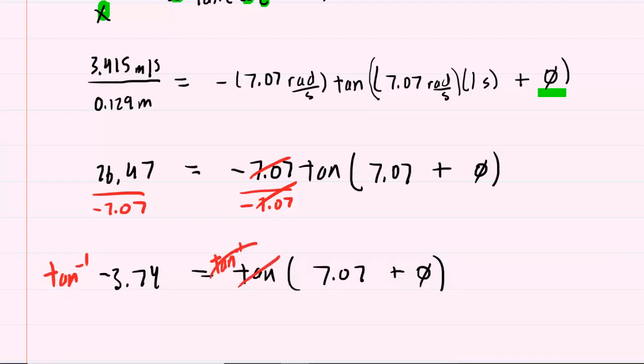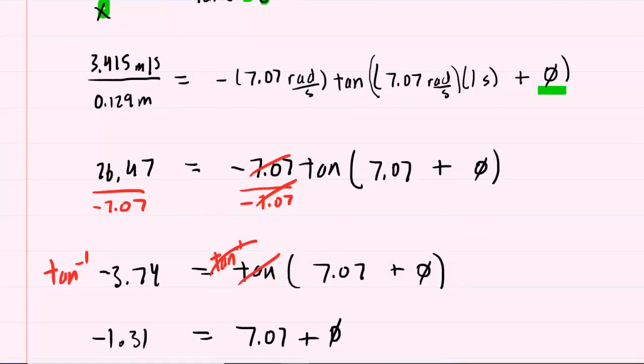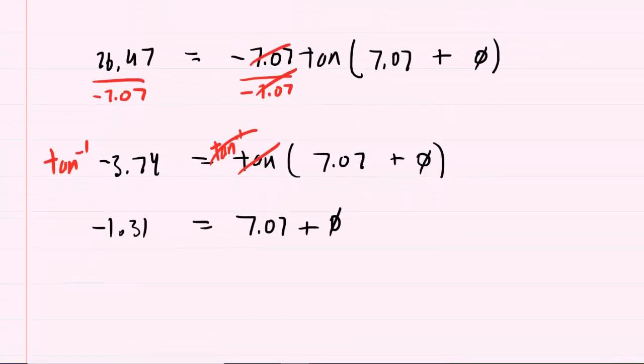On the right-hand side, the inverse tangent and the tangent will cancel out. On the left-hand side, you're going to get negative 1.31. Note that you must have your calculator in radian mode in order to get the proper value. Finally, subtracting 7.07 from both sides of this equation will yield the phase constant, and it turns out to be approximately negative 8.38.